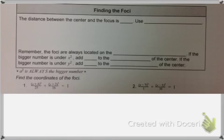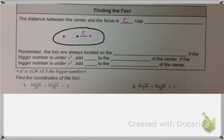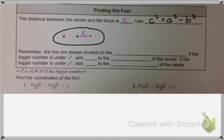So finding the foci — I want to remind you that by definition the distance between the center and the focus is called c. So here's just a little picture. Here's my center, and I know that I'm going to have two foci. This distance from the center to the focus is c. Well how do we find c? We're going to use the equation c squared equals a squared minus b squared, and we know that a squared and b squared are found directly in your equation.